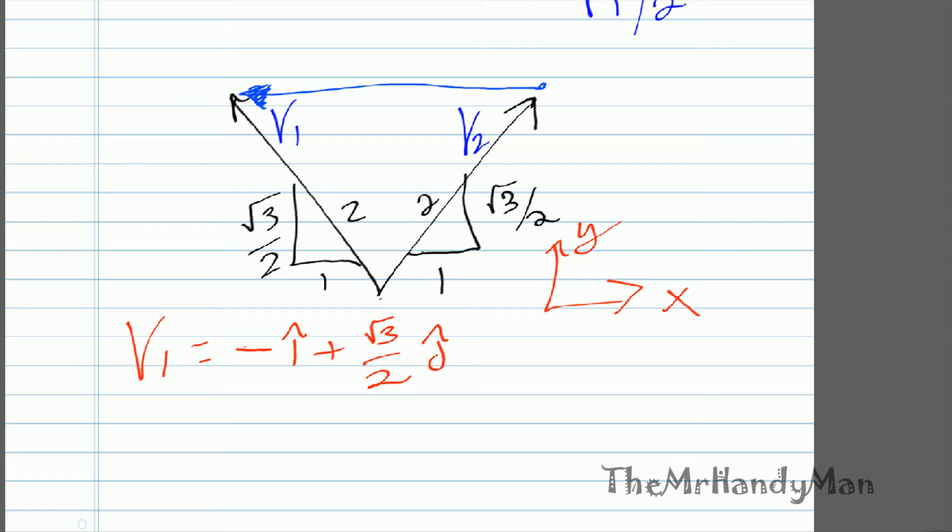If we go to v2, you'll see something similar, except it'll just be i plus √3 over 2 j hat.